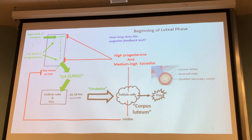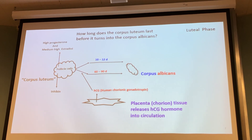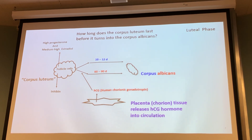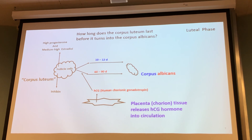The question is: how long is the corpus luteum going to maintain its negative feedback signal? It depends — you have two possible choices. You can maintain that negative feedback for 10 to 12 days. At the end of 10 to 12 days it begins to die and shrivel up, stopping hormone production. The level of estradiol lowers, the level of progesterone lowers, and when you lower the negative feedback you're giving permission for GnRH to begin its pulsatile release again — and you start all over. When that happens the structure becomes the corpus albicans.